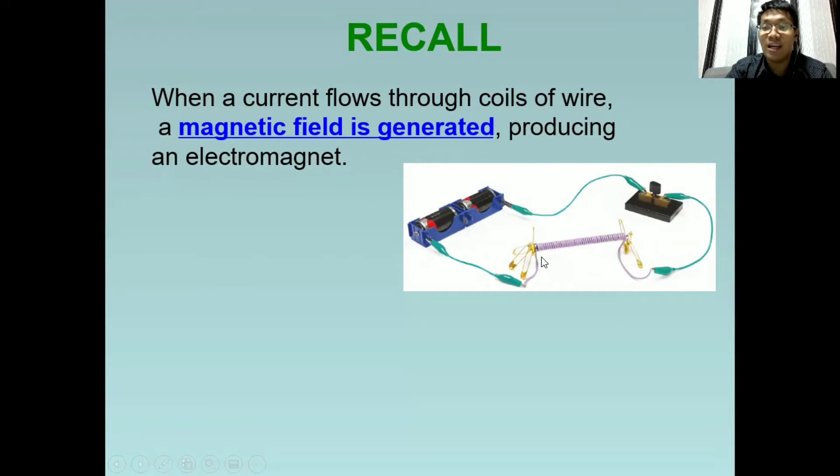...may kita ninyo na na-attract yung mga pins dito sa wire na ito. So, anong indication nun? Kapag may dumadaloy na kuryente sa isang konduktor, ibig sabihin ay nakakaproduce din ito ng magnetic field. At ayun ang rason kung bakit na-attract ang mga pins na ito dito sa ating wire.